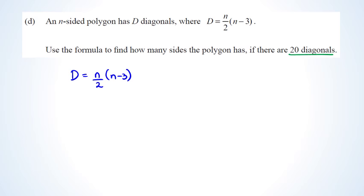D equals 20, so we substitute: 20 equals N over 2 times (N minus 3). To get rid of the fraction, multiply both sides by 2 to get 40 equals N times (N minus 3). Expanding: 40 equals N squared minus 3N. Since N times N gives a quadratic, put it equal to 0: 0 equals N squared minus 3N minus 40.